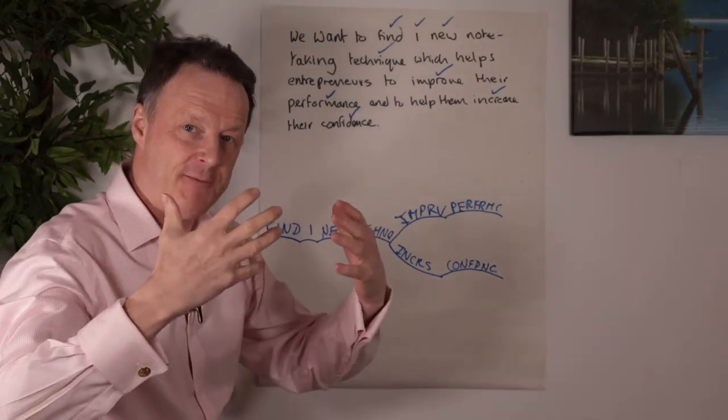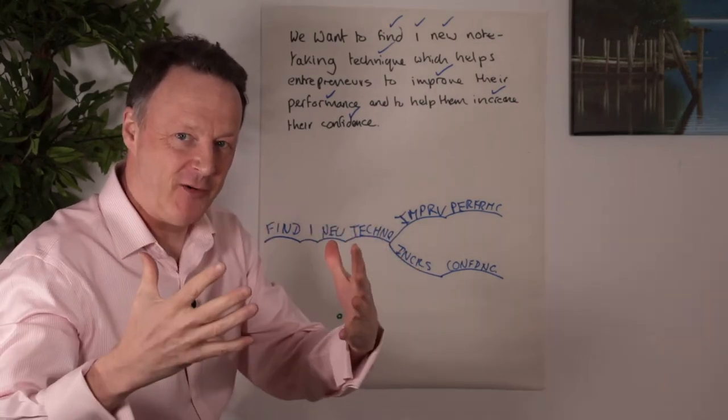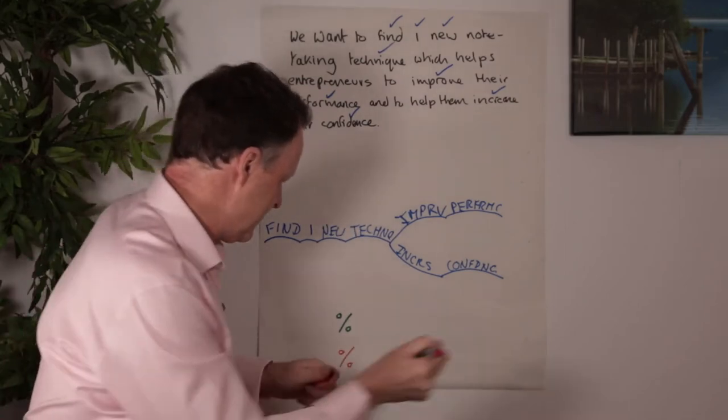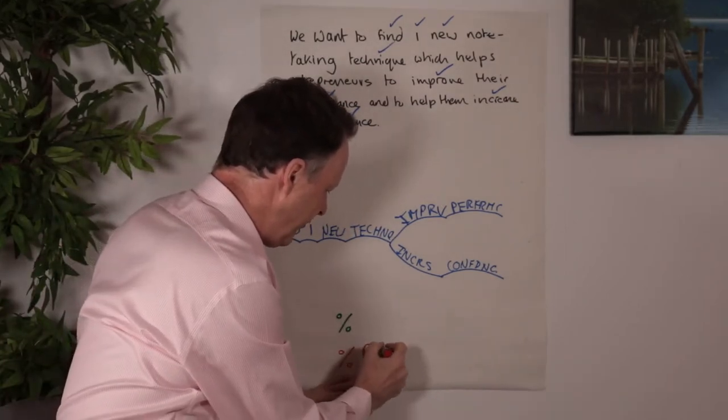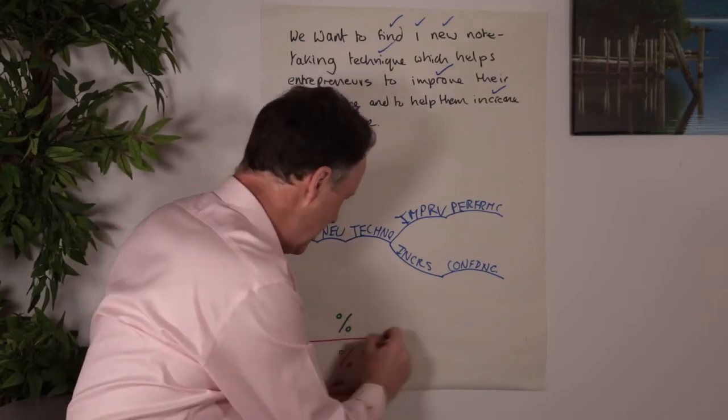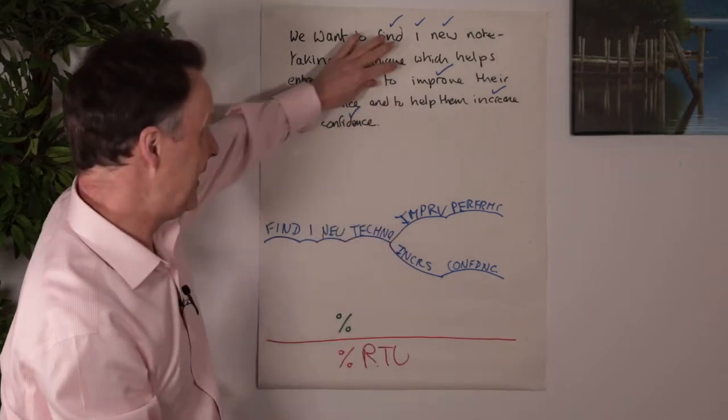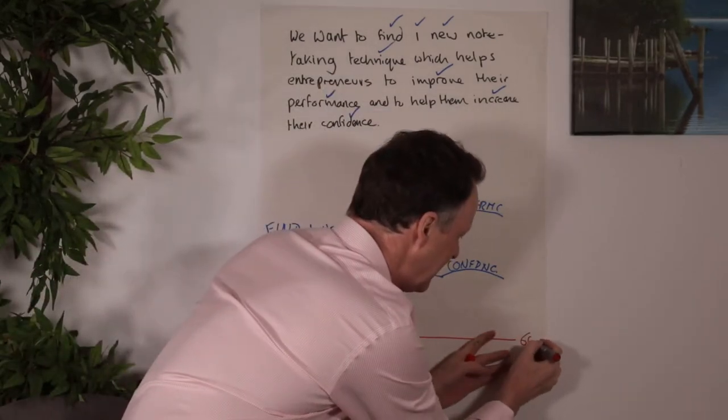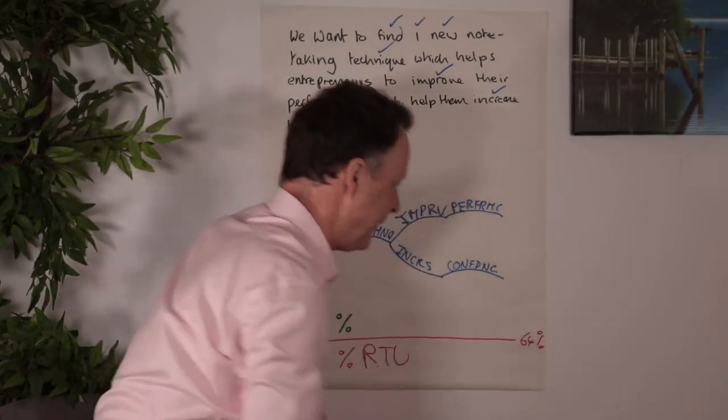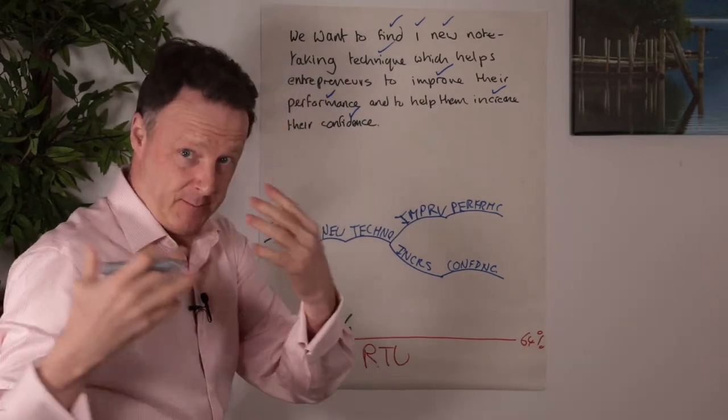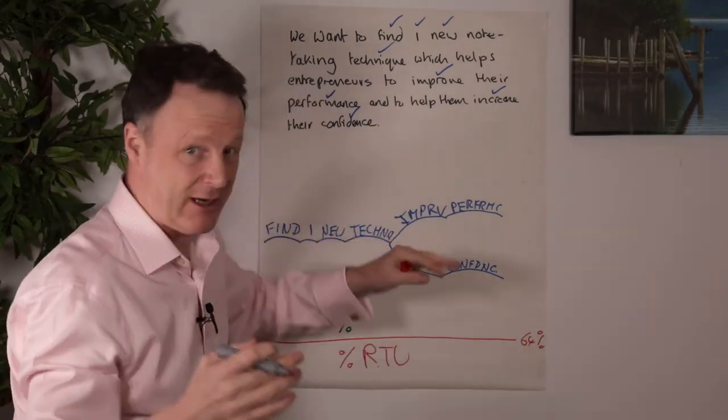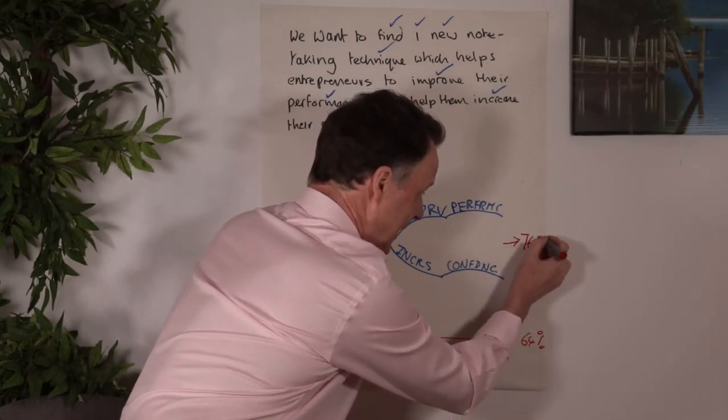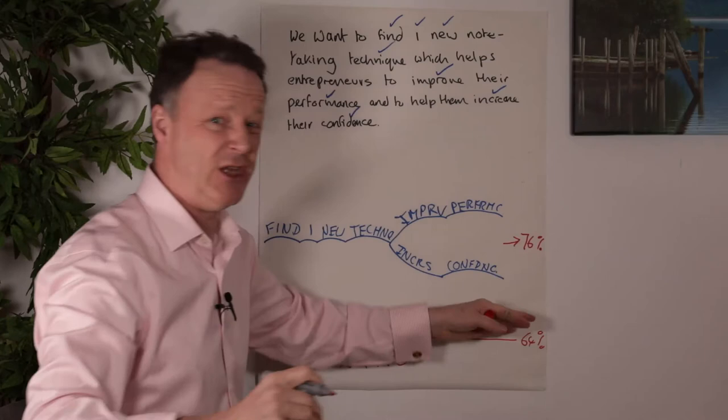Now the combination of the deep filtering and the deep processing is a game changer. And it's because of this. And it's called percentage RTU, which is real time understanding. Now cognitive neuroscientists have tested people using previous generation note taking. Their real time understanding is about 64%. When yourself and I as entrepreneurs switch to next generation note taking, our understanding jumps to 76% within two weeks. That's a huge change.